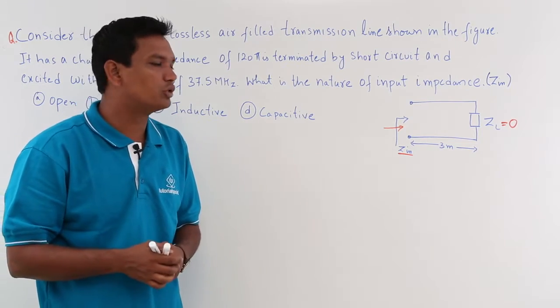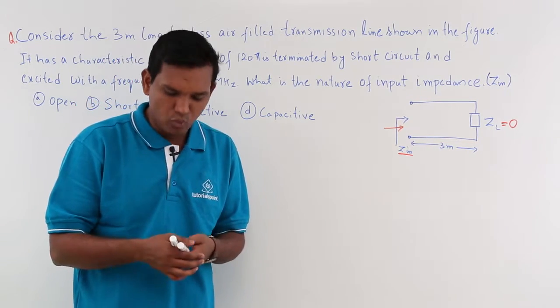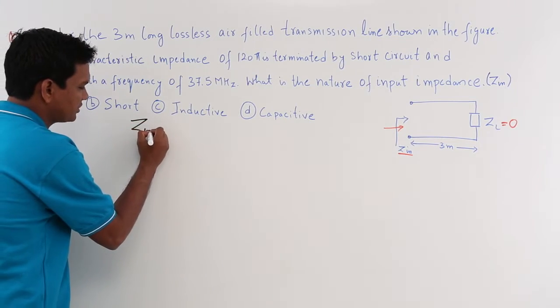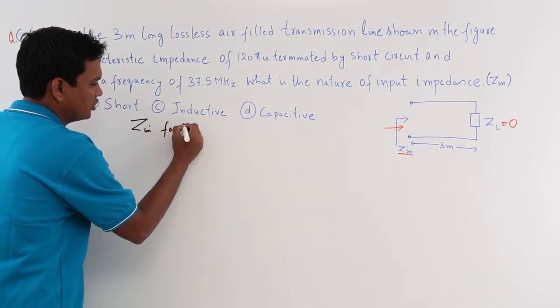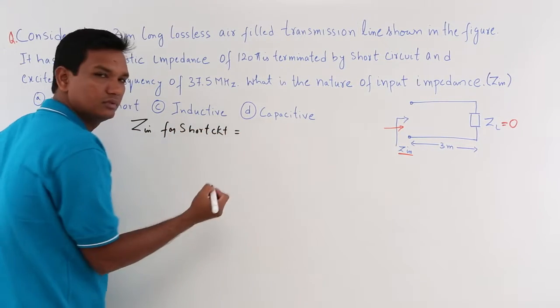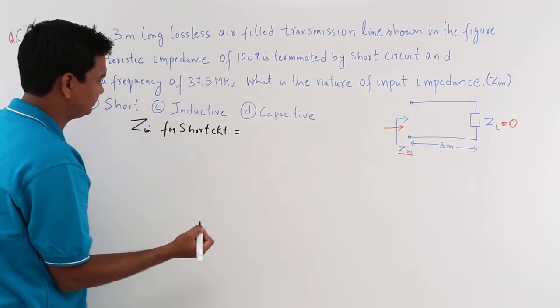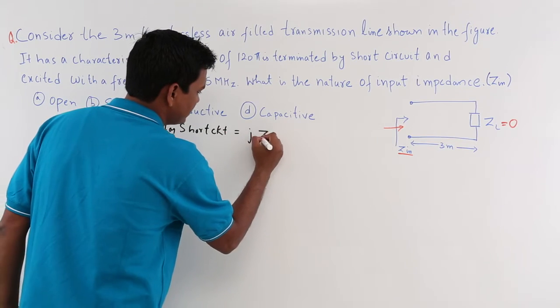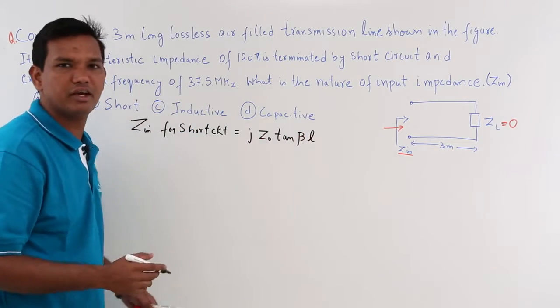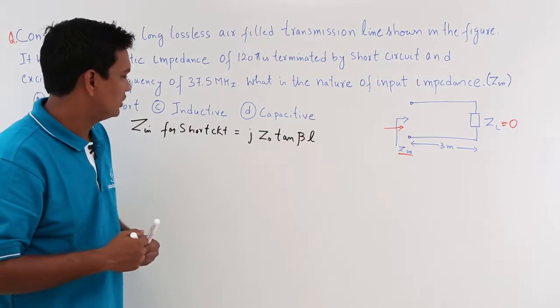We also know that for a short circuit, what is the input impedance? We have already solved this in previous videos. The input impedance for short circuit is Zin = jZ₀tan(βℓ). This we have covered in the previous videos.